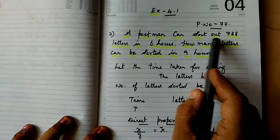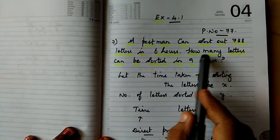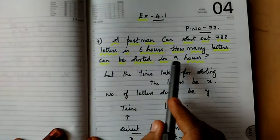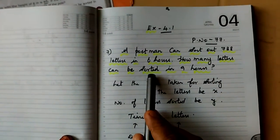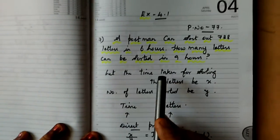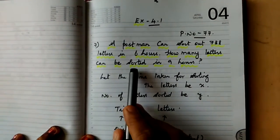A postman can sort out 738 letters in 6 hours. How many letters can be sorted in 9 hours? What is the meaning of sorted? Sorted is nothing but arranging, putting in a proper way. That is the meaning of sorted.